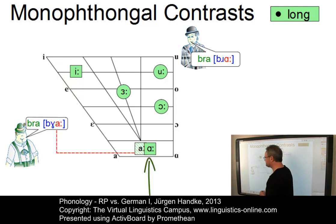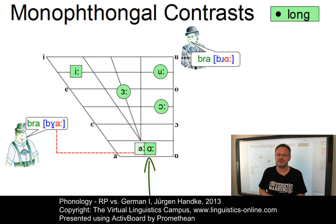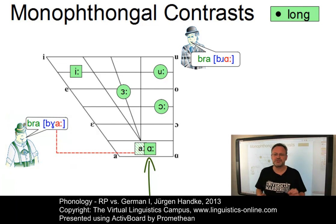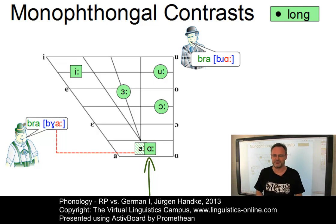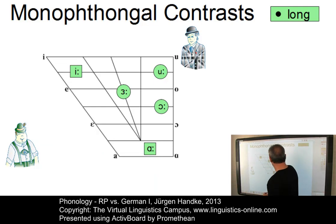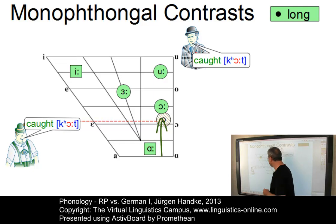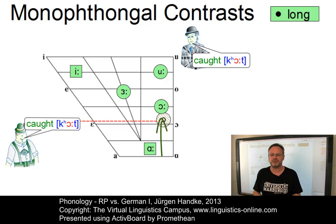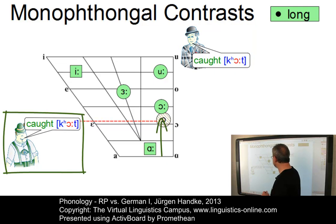The low-back vowel is not problematic for Germans; we have few problems with this. Maybe we slightly front the RP value — so in RP it would be 'bra', and in German it would be something like 'bra', using the German R, in this case a voiced uvular fricative. The next one is the mid-back vowel: 'caught'. This is not problematic for Germans — the quality of this vowel is similar to its short German counterpart in words like 'Post' or 'Boss', so 'caught' is not really a problem. Maybe the German value is a little bit lower.